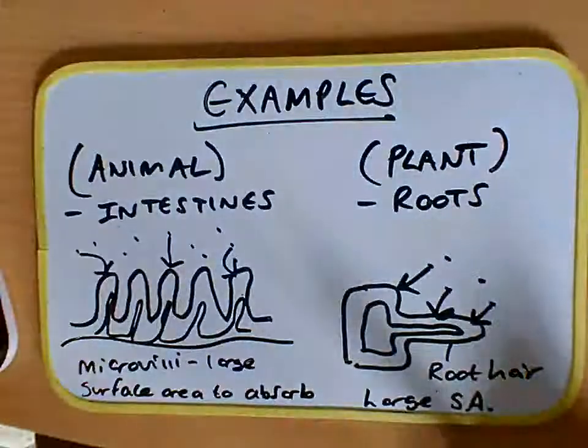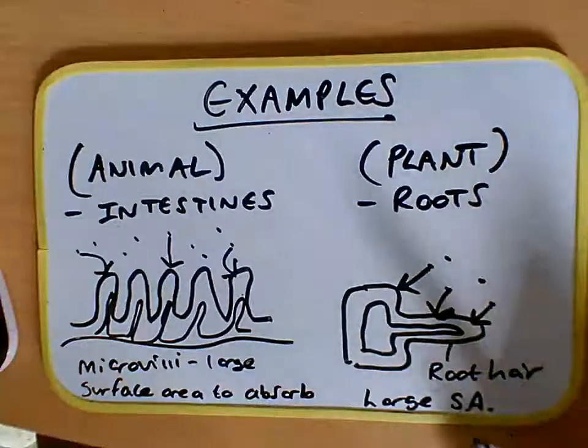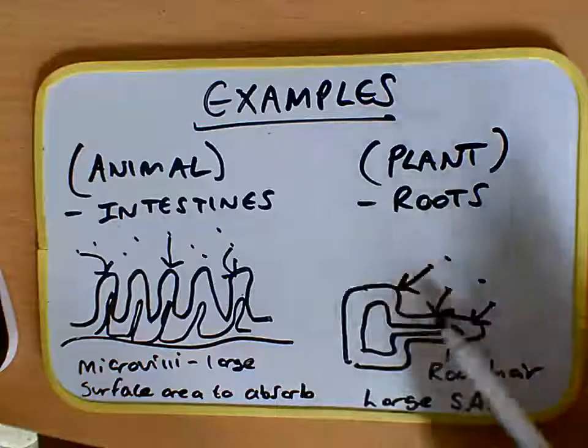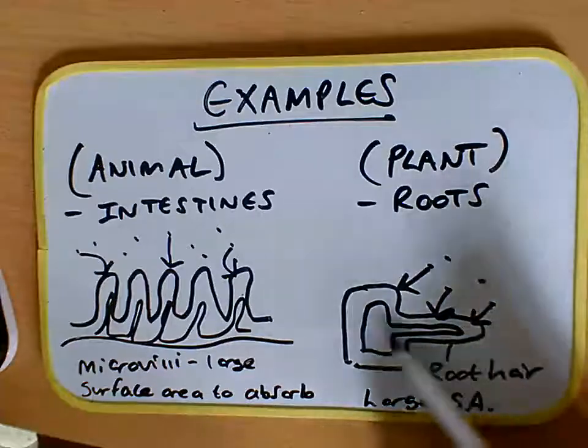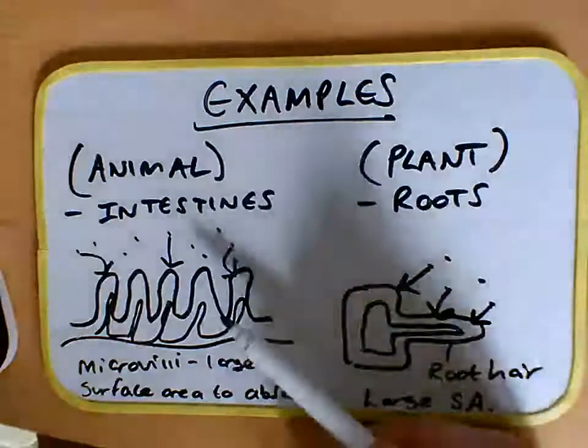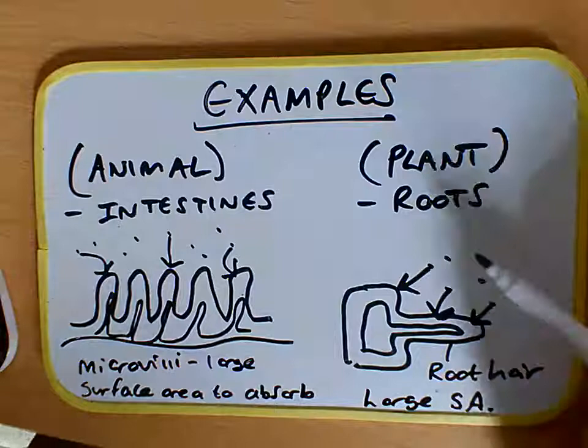In plants, the roots is a good example. This is a root hair cell here, and this has this extended part here which is the root hair. Again, a large surface area, so it's a little bit like the microvilli in the plant.